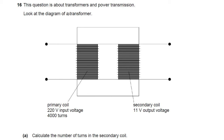Look at the diagram of a transformer. You're told some of the information and you have to work out the third and fourth bits of information. You're told the input voltage, you're told the number of turns on the primary coil, and you're told the voltage on the secondary coil. You have to work out the number of turns in the secondary coil — that is the missing fourth bit of information.